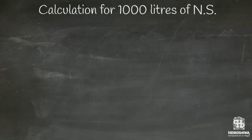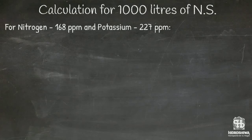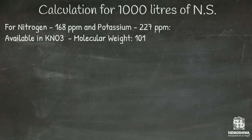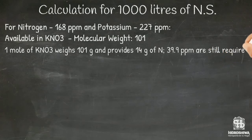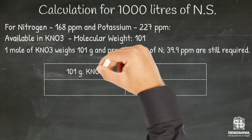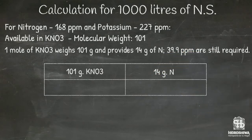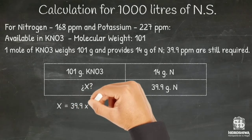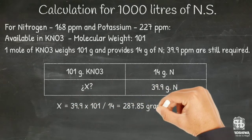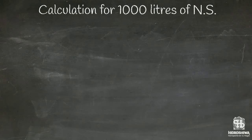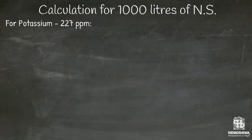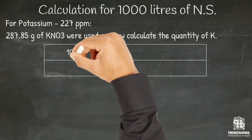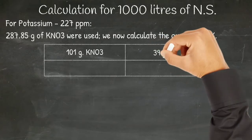We continue with nitrogen and potassium, which are contained in potassium nitrate. The molecular weight is 101. One mole of potassium nitrate weighs 101 grams and provides 14 grams of nitrogen. We calculate the amount of potassium nitrate to provide 39.9 grams of nitrogen: X equals 39.9 times 101 divided by 14, resulting in 287.85 grams of potassium nitrate. That amount provides 39.9 grams of nitrogen and 111.15 grams of potassium.